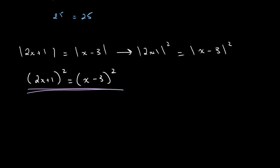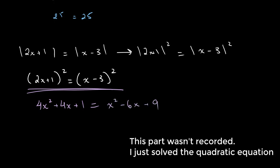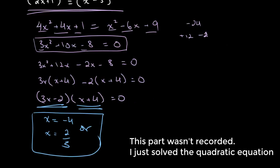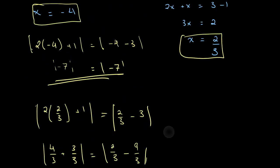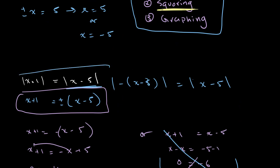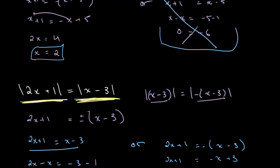Using the example again: the absolute value of 2x plus 1 equals the absolute value of x minus 3. We square both sides, giving us 2x plus 1 whole squared equals x minus 3 whole squared. Expanding using a squared plus 2ab plus b squared: 4x squared plus 4x plus 1 equals x squared minus 6x plus 9. I also encourage you to try solving the earlier example — absolute value of x plus 1 equals absolute value of x minus 5 — by squaring to verify you get x equals 2.